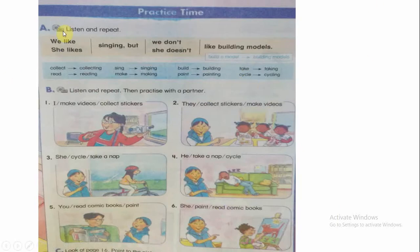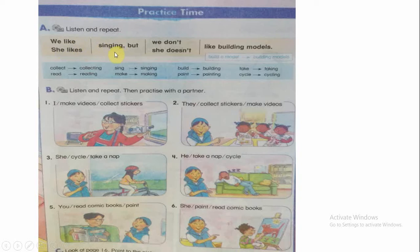Listen and repeat. We like singing, but we don't like building a model. She likes singing, but she doesn't like building a model. After like or likes, we use gerund. Verb plus -ing.